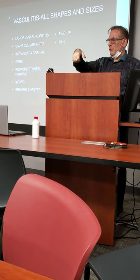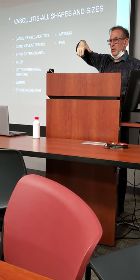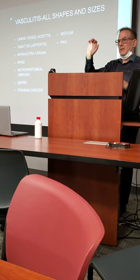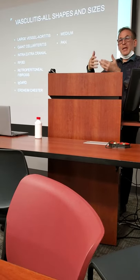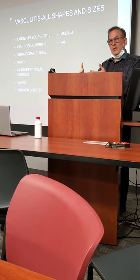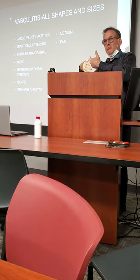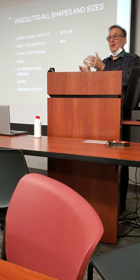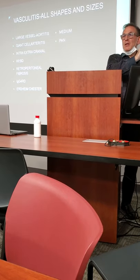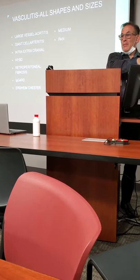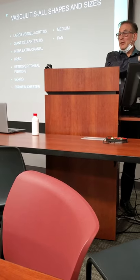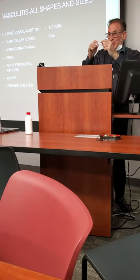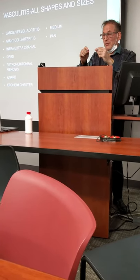Radial nerve is wrist drop, ulnar nerve is claw hand. So if you can name the nerve, that would be a medium or large nerve. If you can't name it, then you're in the small fiber neuropathy, and that's in the skin — that's where you need a skin biopsy to measure the small fiber of the nerve.